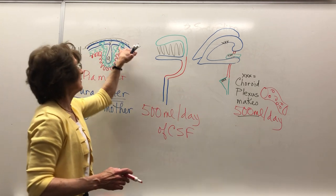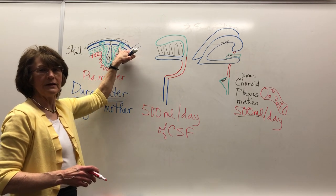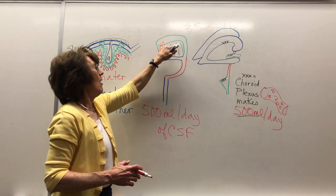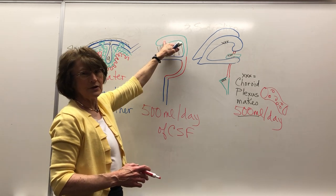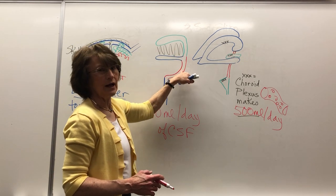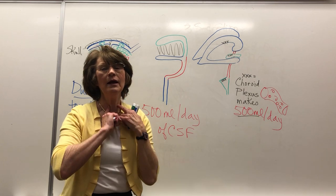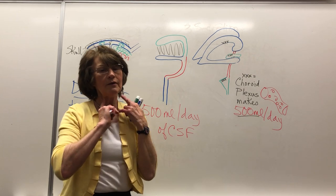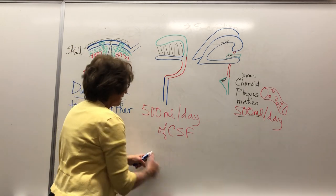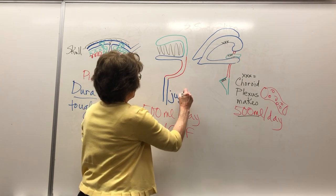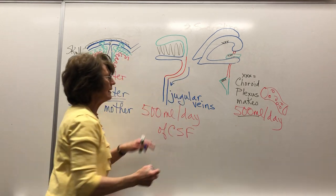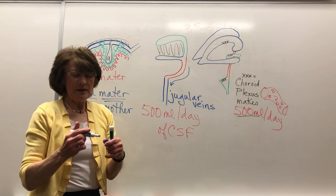Arachnoid granulations reabsorb this CSF into the bloodstream. On this diagram, this is the superior sagittal sinus and this is the inferior sagittal sinus. Here we've got a transverse sinus. Those veins that we've got are the jugular veins, and so it drains down into the jugular veins. We need that ability to reabsorb.